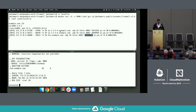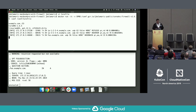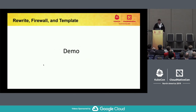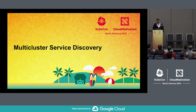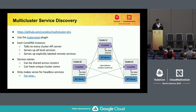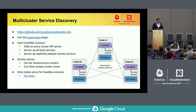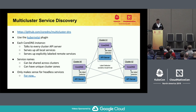Those are some of the fun tricks you can do with the template, rewrite, and firewall plugins. Extended with Kubernetes, you can build multi-tenant service discovery using these primitives. There's also a plugin called KubernetesEI that allows CoreDNS to talk to multiple cluster API servers at once and publish that data for multi-cluster service discovery. It has limitations — cluster IPs are meaningless across clusters so it's really for headless services — but in a GKE environment where pod IPs are routable, it's useful. There's a link with scripts to try it in GKE.